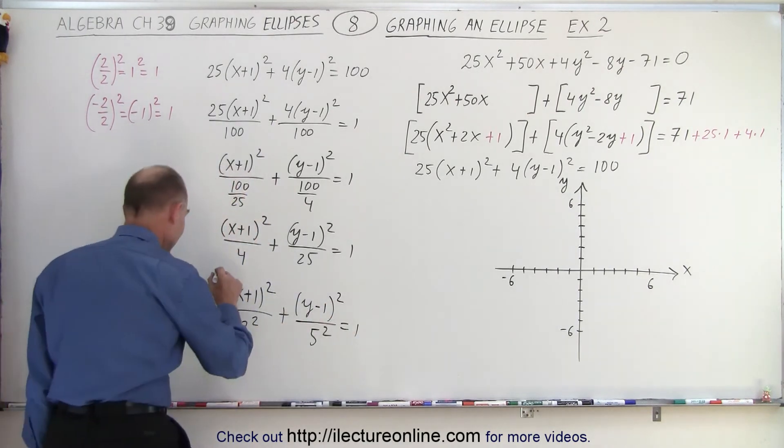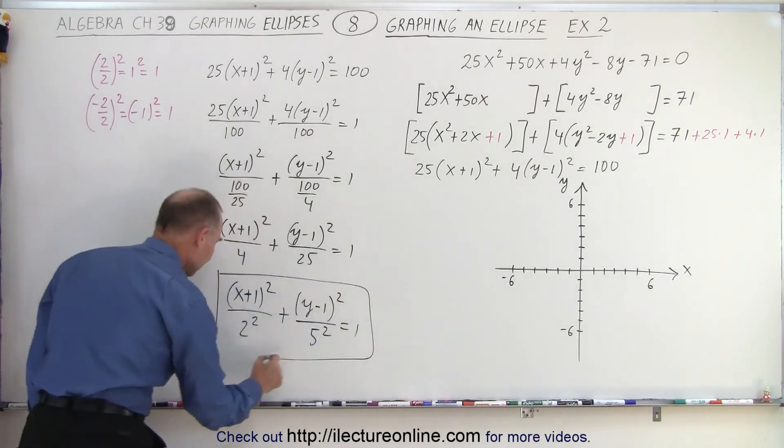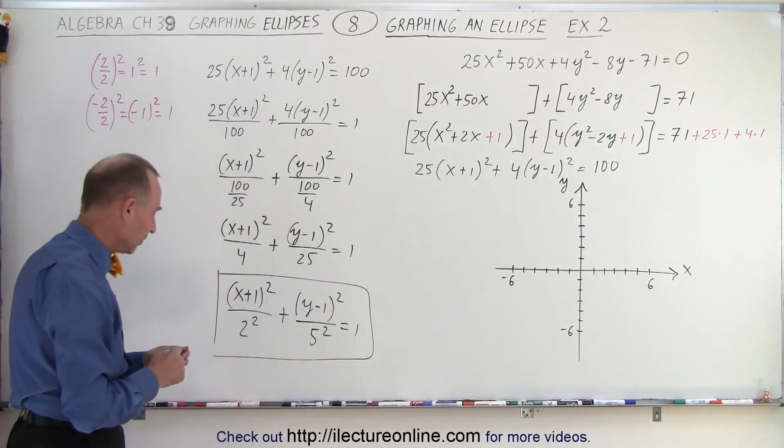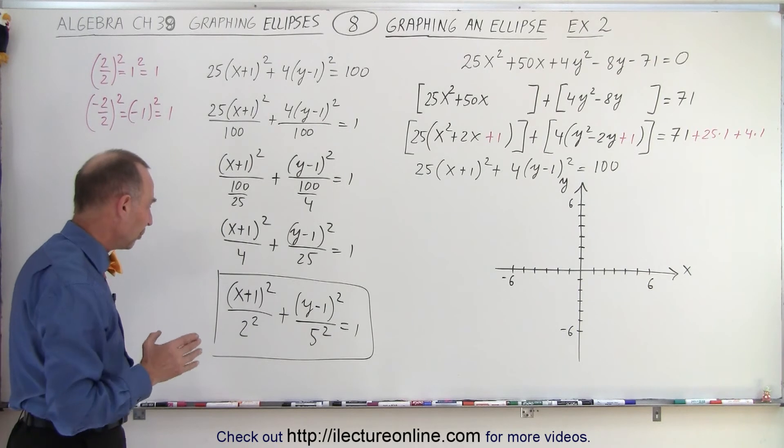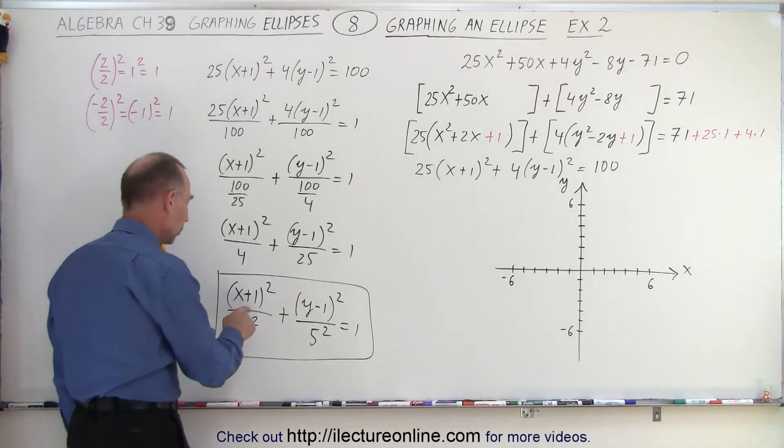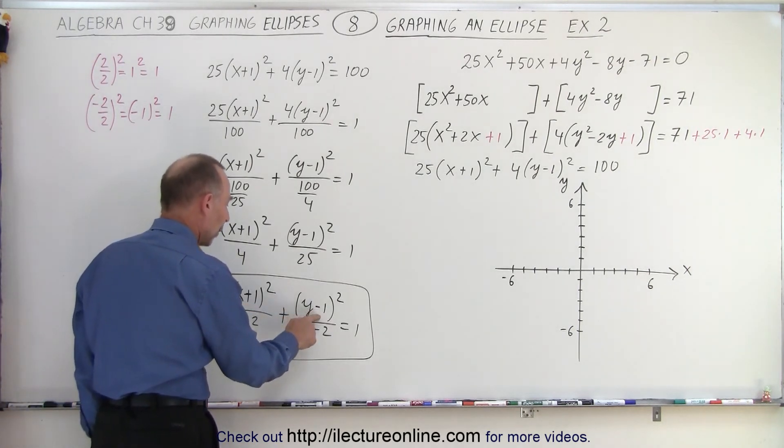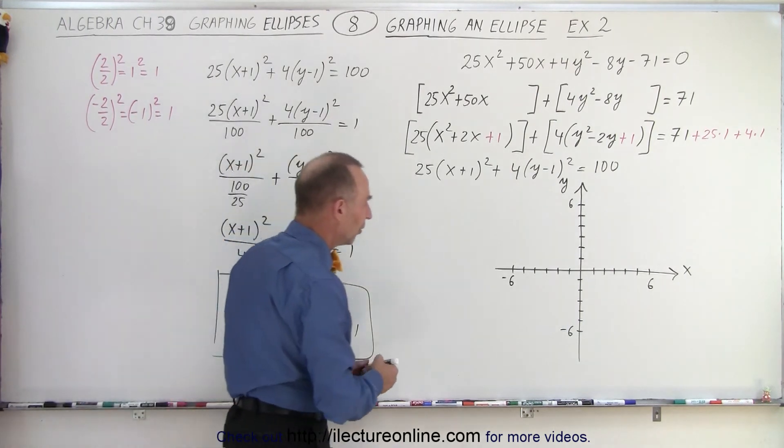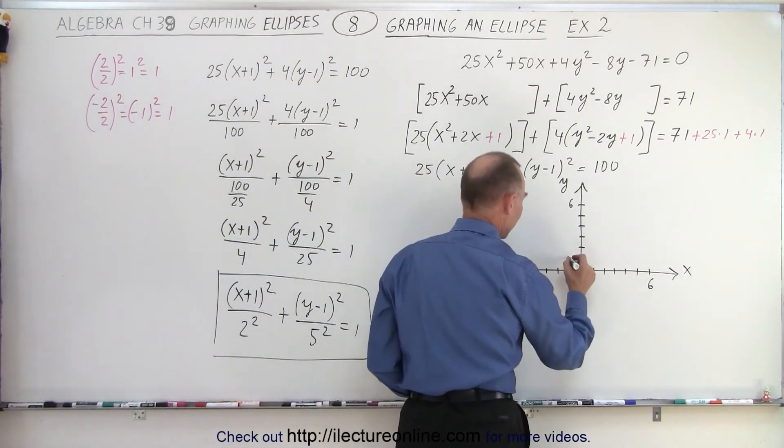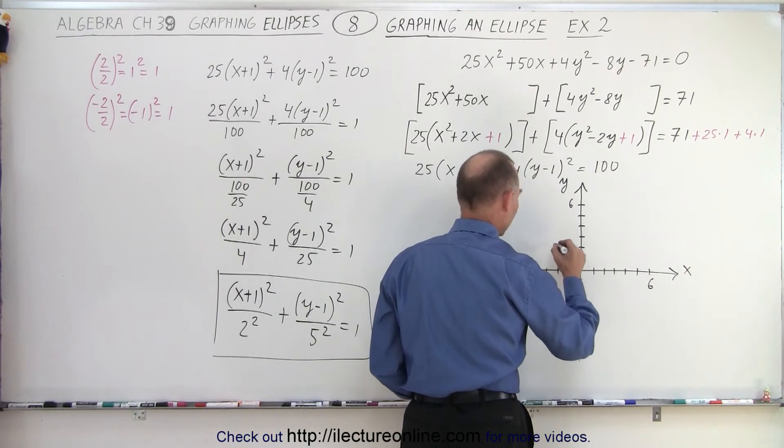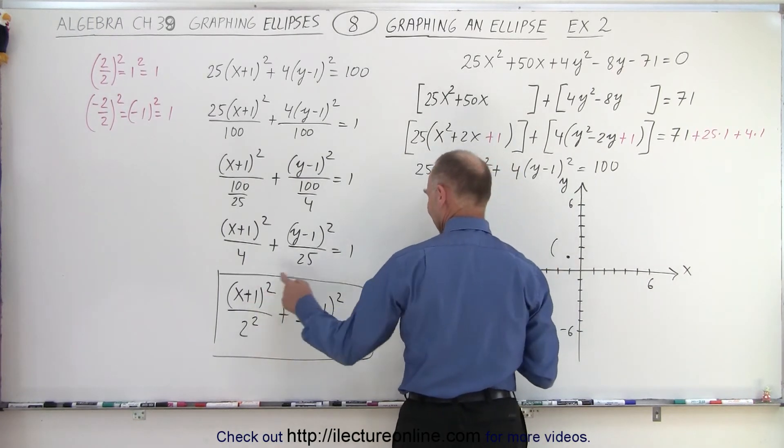Now we have it in the proper format, the general equation of an ellipse. First we find the offset from the origin. We move left 1 unit and right... I mean up 1 unit. So left and up, this is the new central point of the ellipse at (-1, 1).